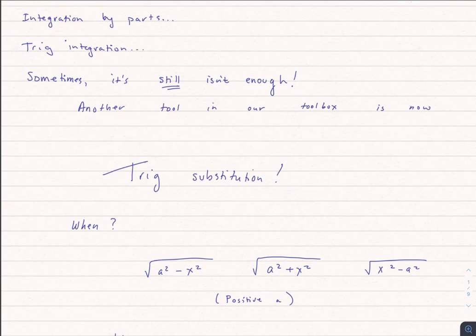Trig substitution is going to be used when we have things in the form of a squared minus x squared, a squared plus x squared, or x squared minus a squared. Now you might look at this and say those don't look like trig to me.